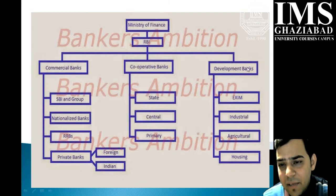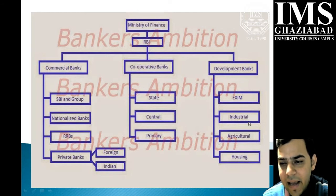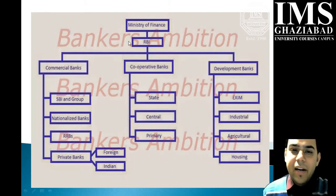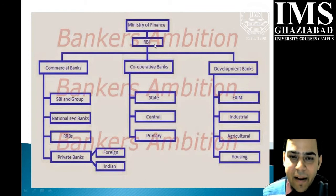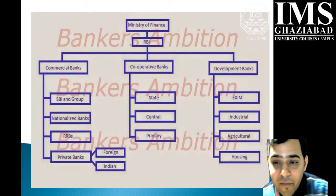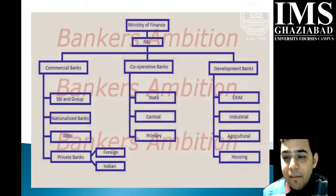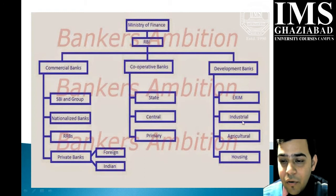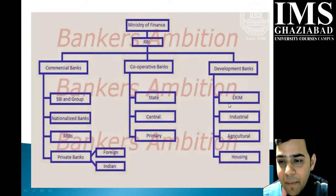The third category is development banks. Development banks can further be divided into four categories: Exim, industrial, agricultural, and housing. The Reserve Bank is the apex — the only bank operating in India to control and regulate the entire system. These development banks are also apex banks, divided into the four parts: Exim, industrial, agricultural, and housing.